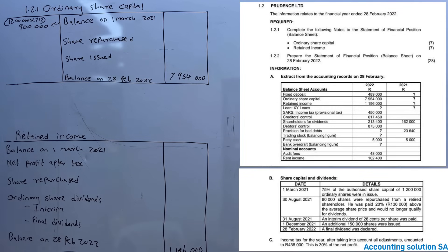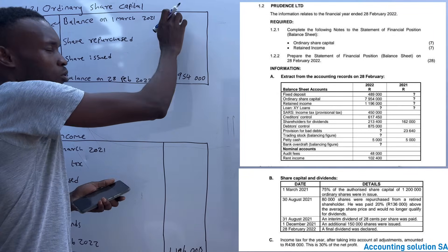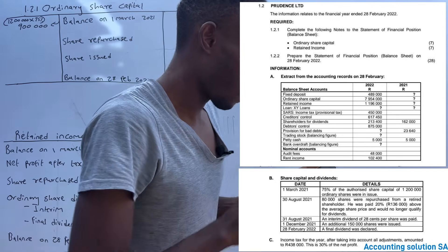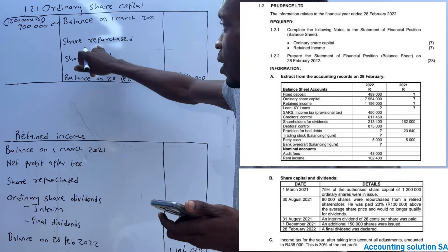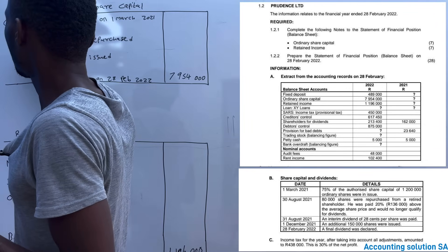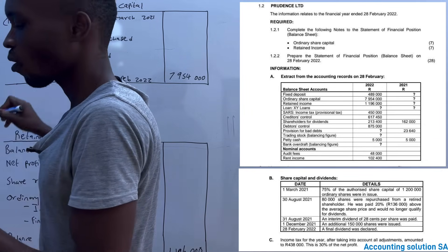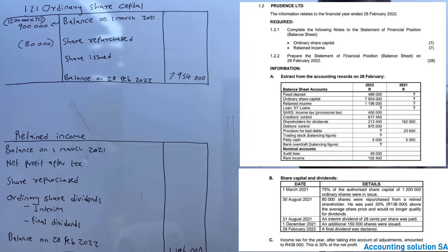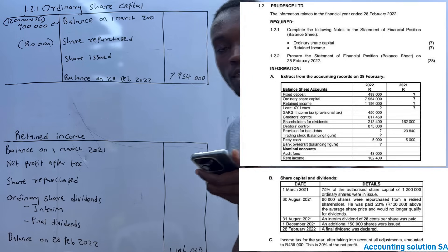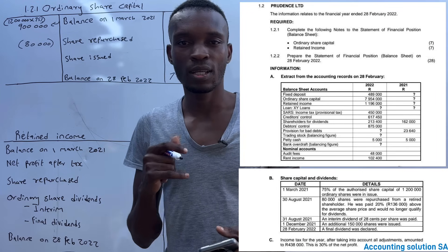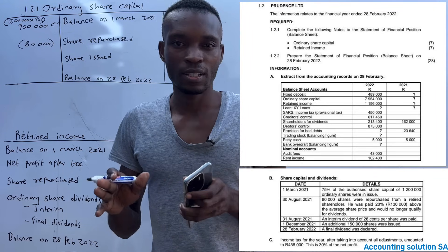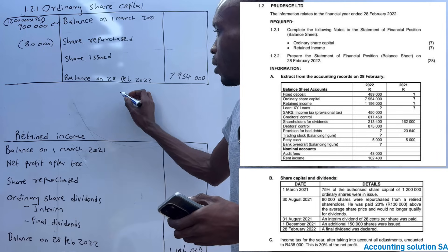We don't know the cost per share, so we cannot find that amount yet. Then they said 80,000 shares were repurchased - so under repurchase we write minus 80,000 shares. They said these were repurchased from a retired shareholder who was paid 20% - that is 136,000 - above the average share price. Remember, any amount above average is a loss.